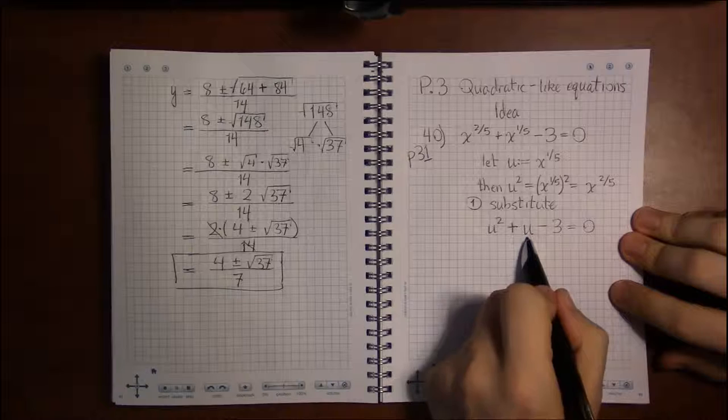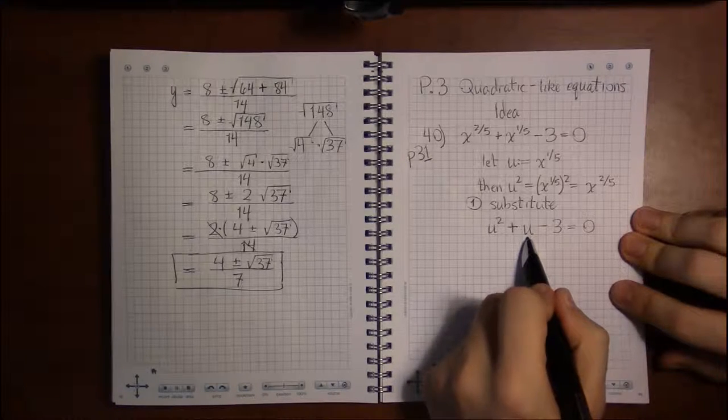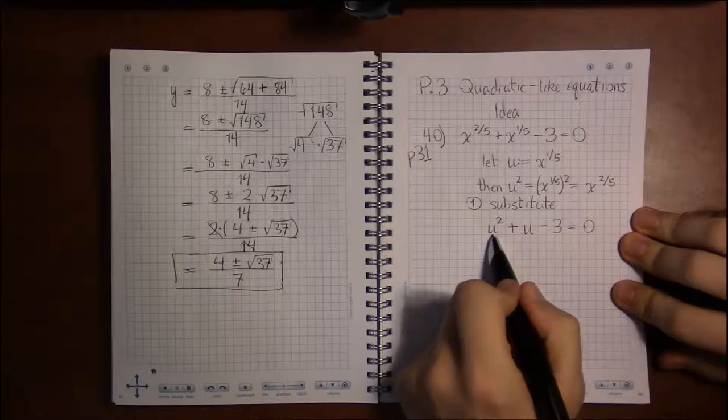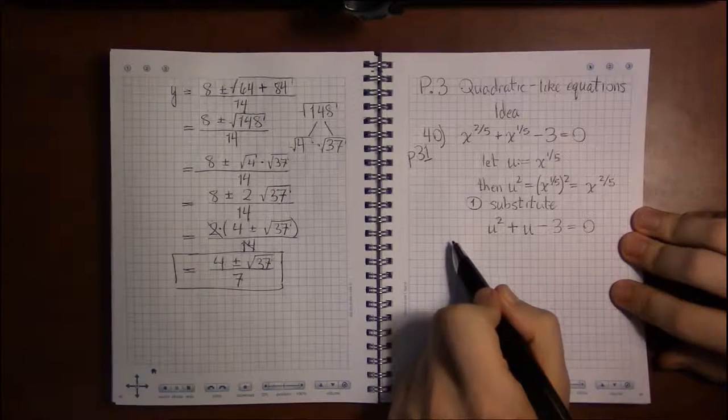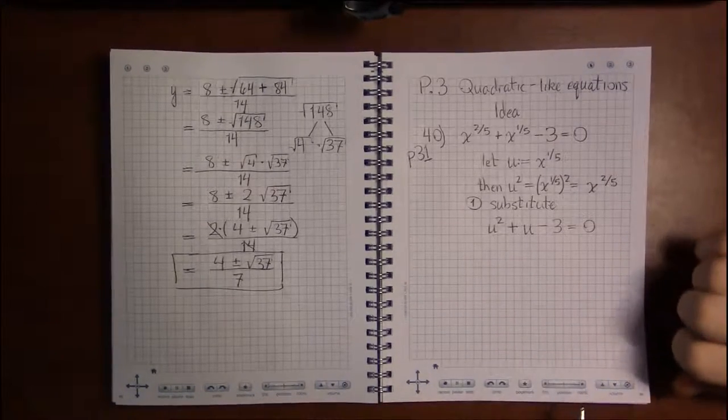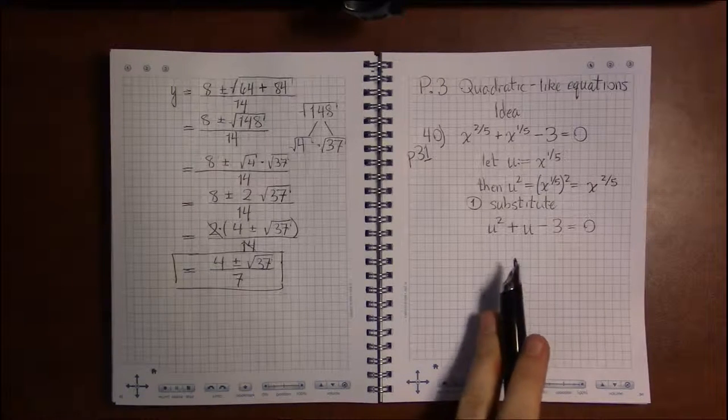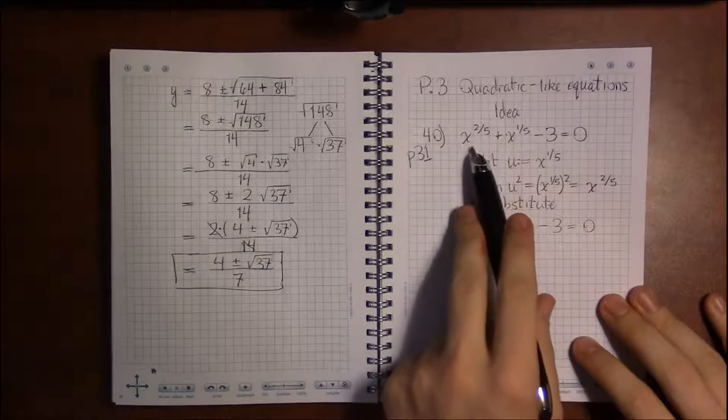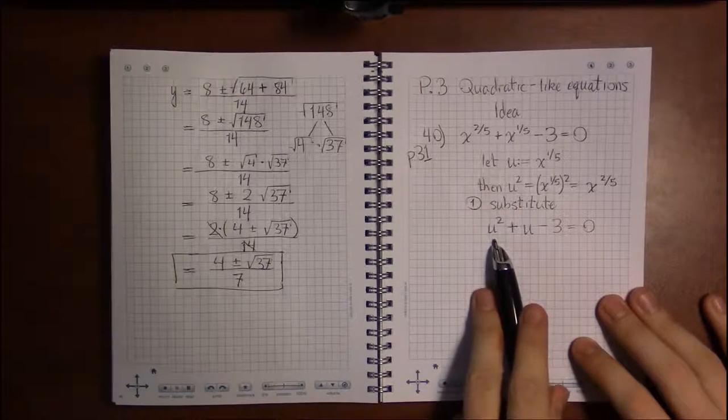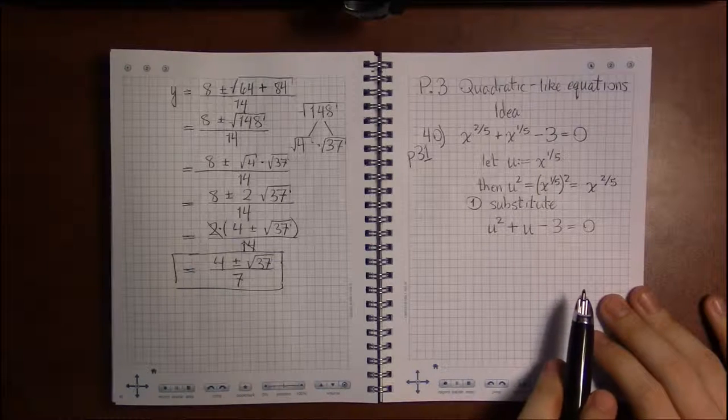And then I have minus three equals zero. Now that is quadratic. I've got u squareds, I've got u's, I've got numbers, and that's it. This is quadratic. So this should be relatively simple, or at least simpler than this, to solve.